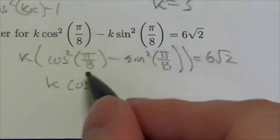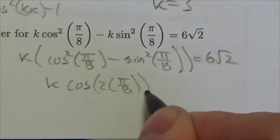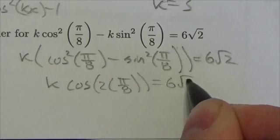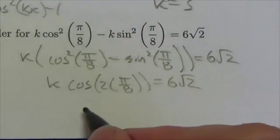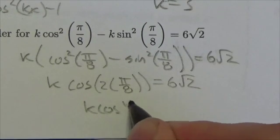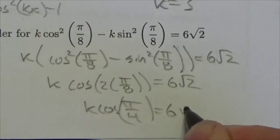So this reduces down to the cosine of 2 times π/8, which we know will be equal to 6√2. Now, 2 times π/8 is just going to be cos(π/4) = 6√2.